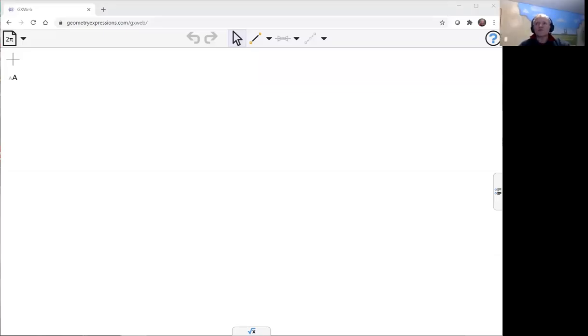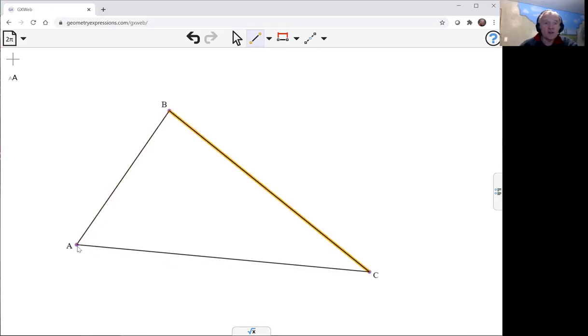So we're going to compute the angle between the lines joining the points of contact between the incircle and the sides of a triangle. And it'll be in terms of the angle of the original triangle.